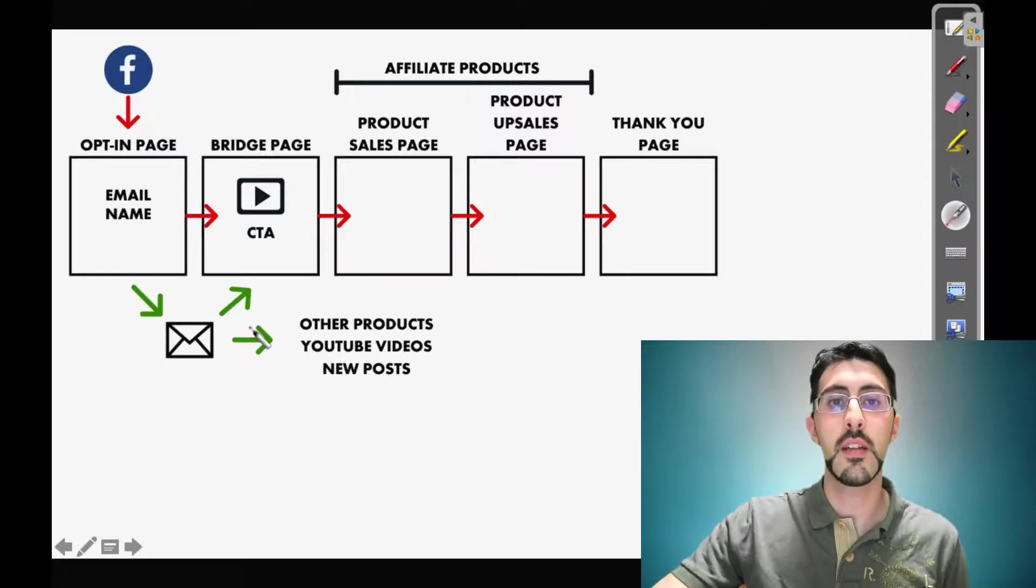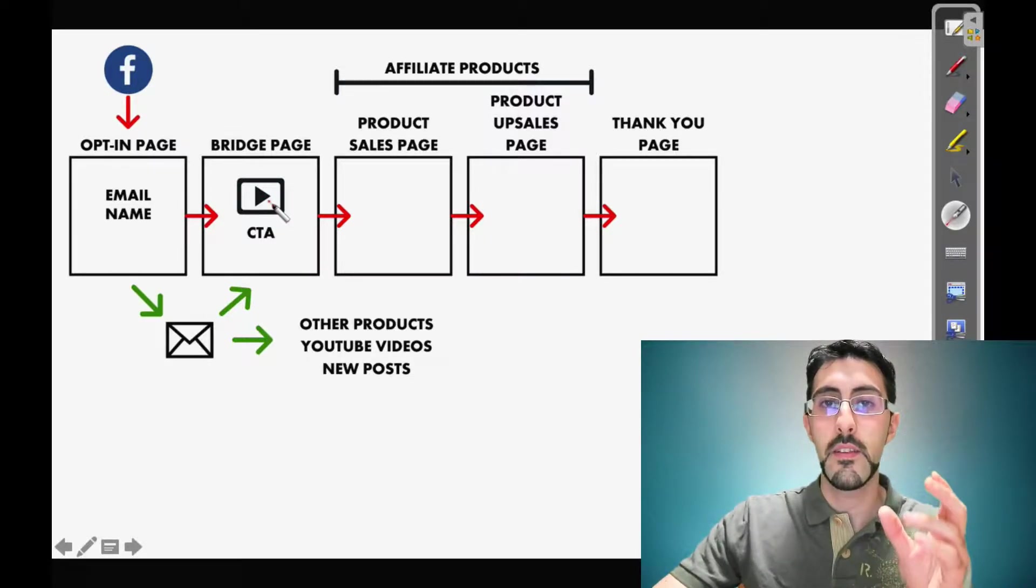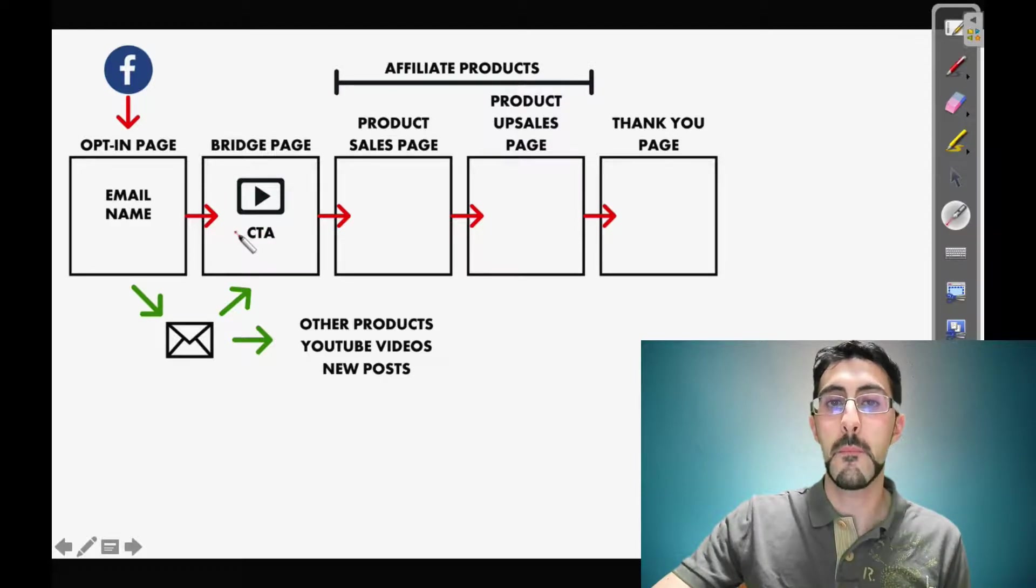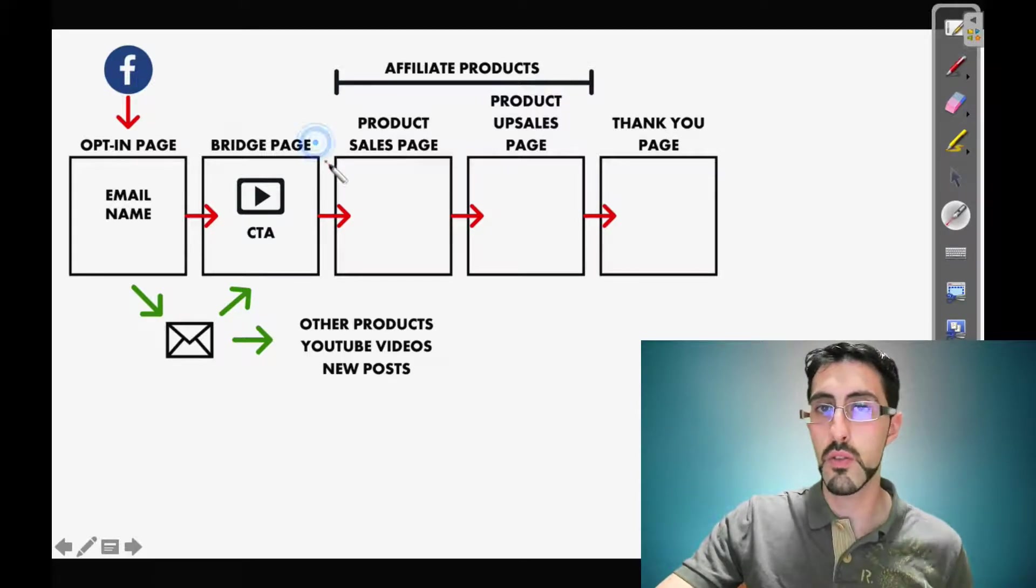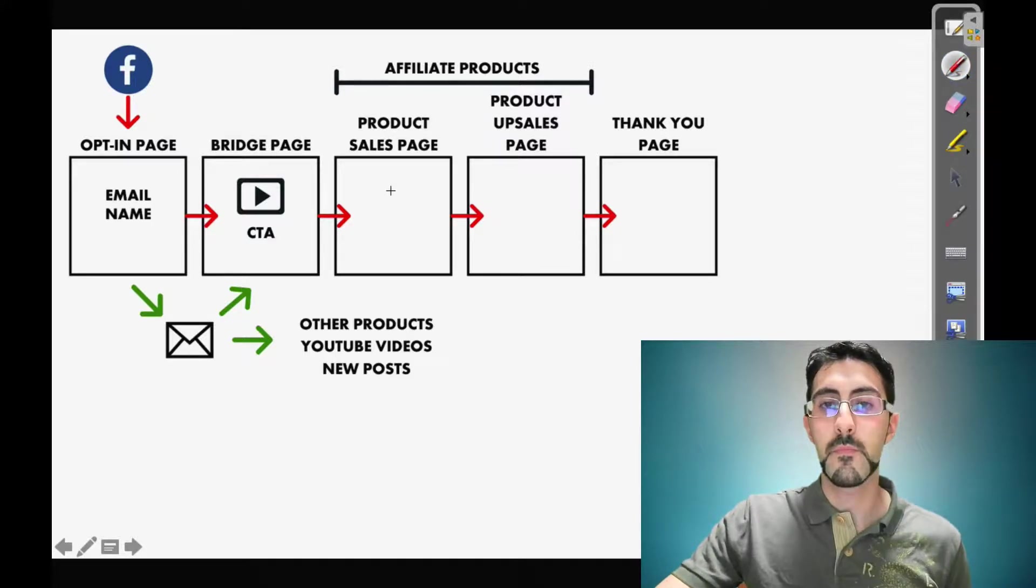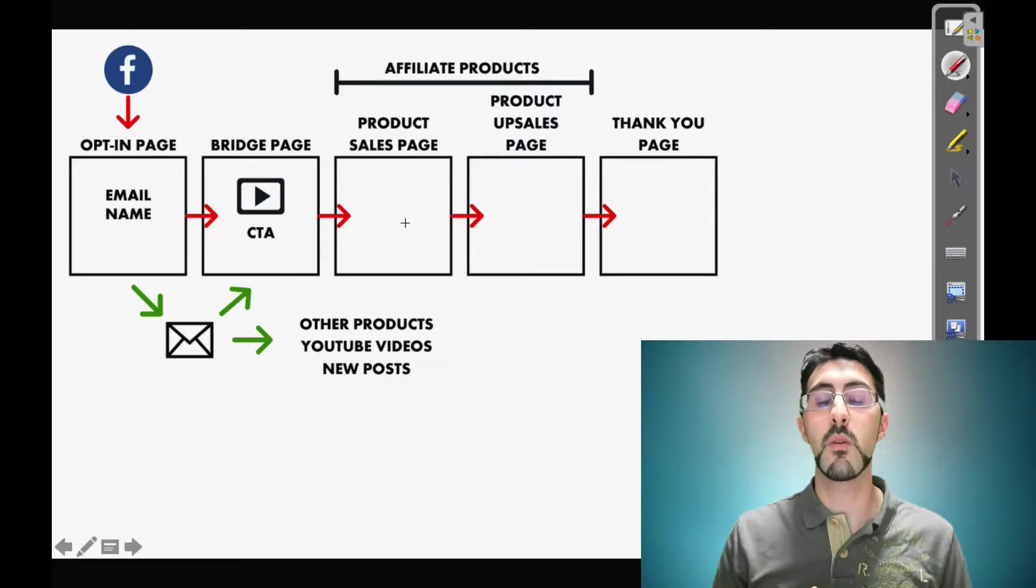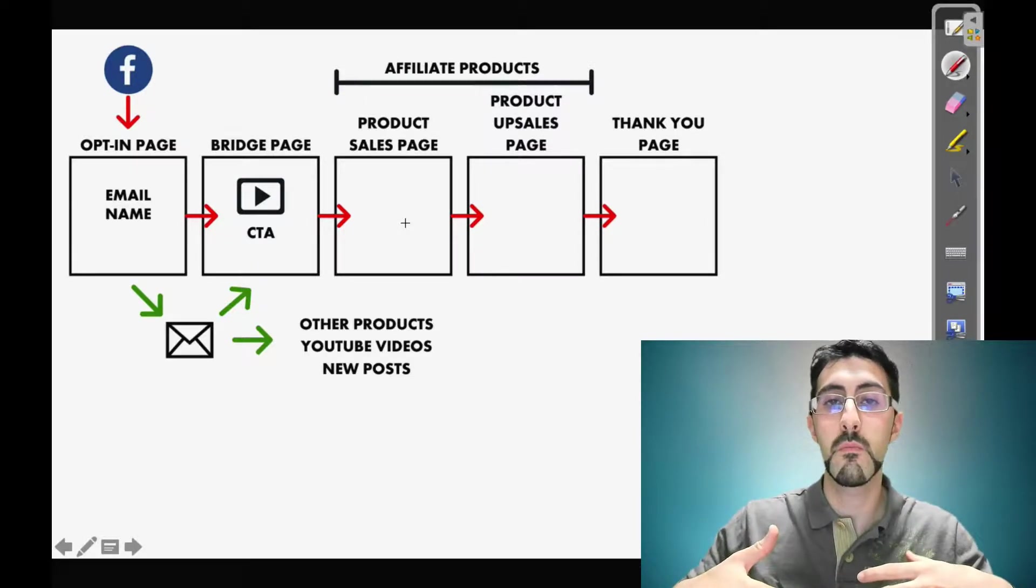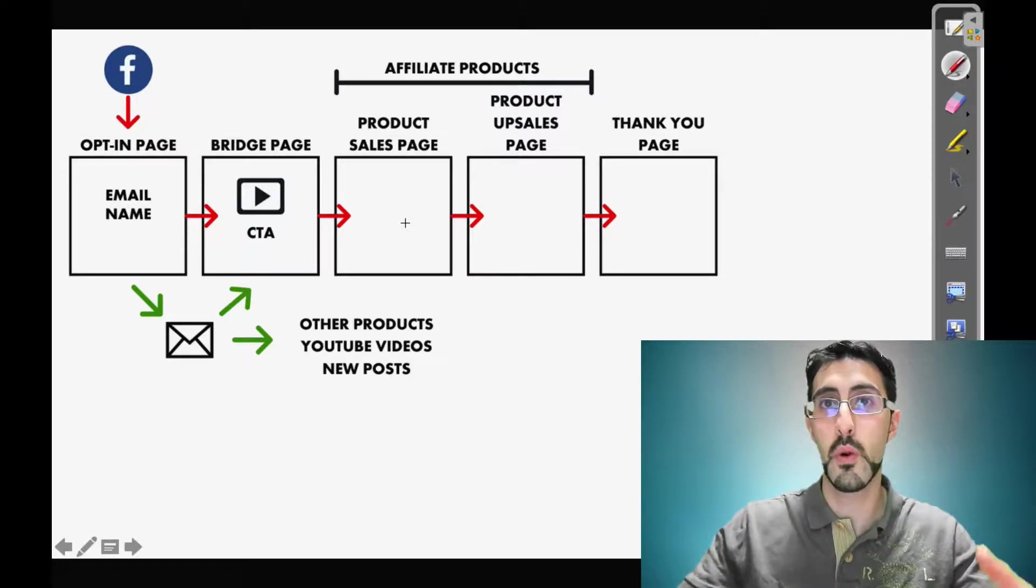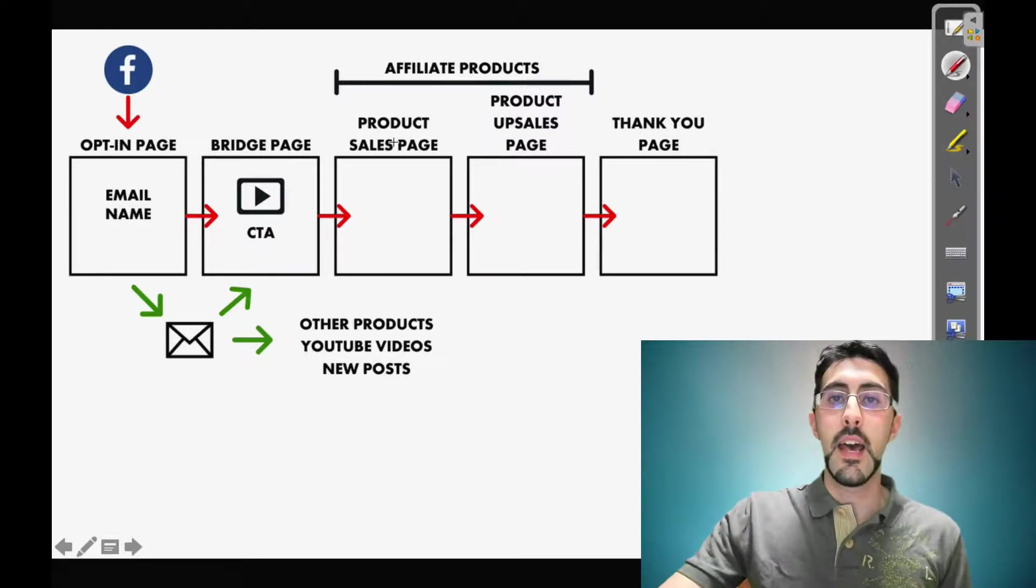Some autoresponders have cart abandon options, used to be a paid option, but if you have that you can actually know if your traffic has clicked on this button or if they have just closed this page. So you can send them different emails that are more personalized, more customized to your lead, so they're more willing to make a sale.